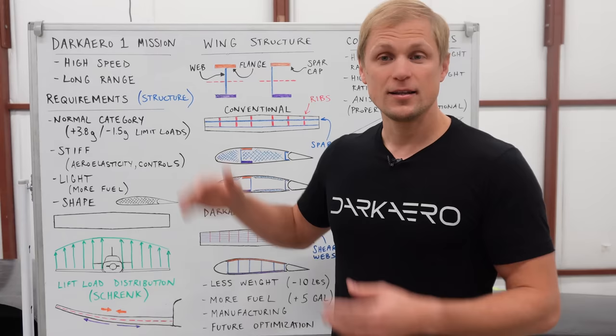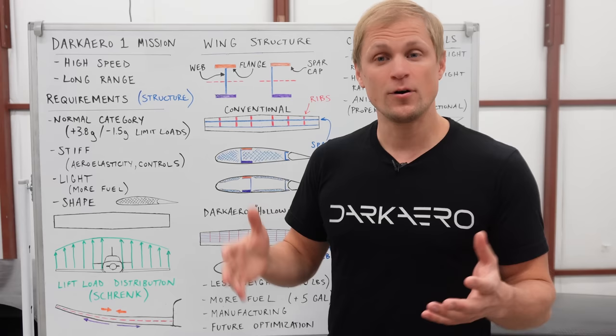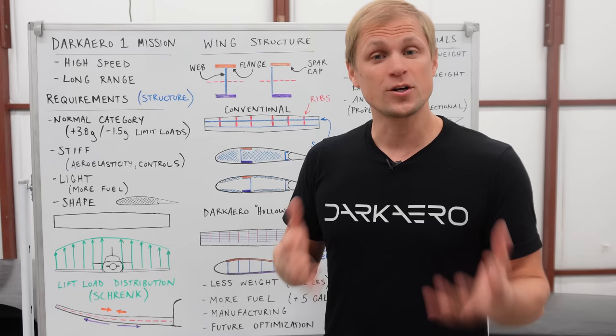These are the loads that it has to see day in and day out without complaint. The ultimate loads where the structure actually fails are a safe margin beyond the limit loads. We want our wing to be stiff so we avoid any negative aeroelastic effects like aeroelastic flutter, structural divergence, or control reversal.